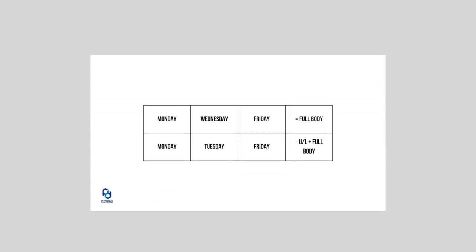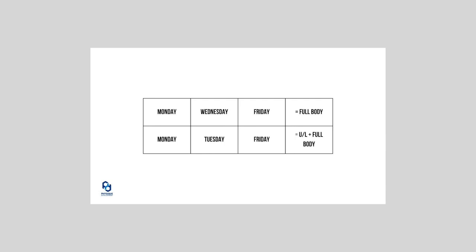The first thing we need to do when setting up a training program is figure out which days we're training. Which days we're going to train will dictate what our training split — or the organization of our workouts — is going to look like throughout the week. The first option is a full body example, used if we're working out on Monday, Wednesday, and Friday.